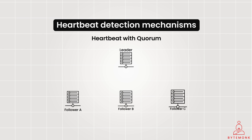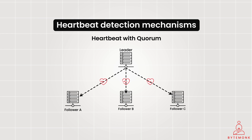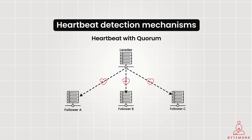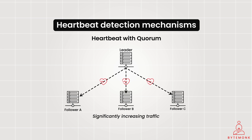Heartbeat with quorum is used in a highly distributed system where a majority vote is required to confirm availability. Nodes send heartbeat signals to multiple peers, and a node is considered alive only if it receives a quorum — or majority — of acknowledgement responses from its peers. This technique reduces the risk of a single network issue or node failure causing incorrect failure detection. It is suitable for highly distributed systems where immediate fault tolerance is required. However, it adds significant network overhead since heartbeats and acknowledgements are sent to multiple nodes, and also introduces coordination overhead from managing quorum consensus.